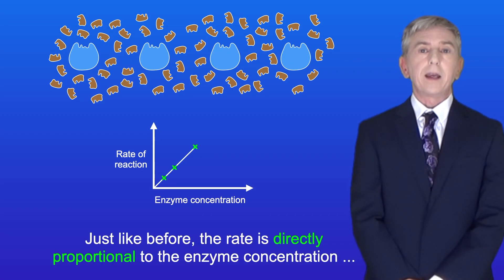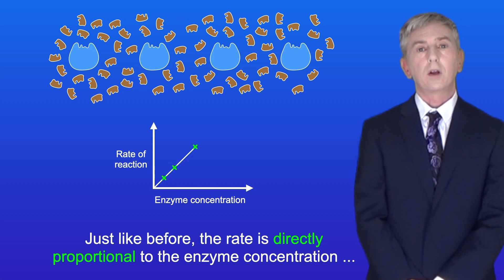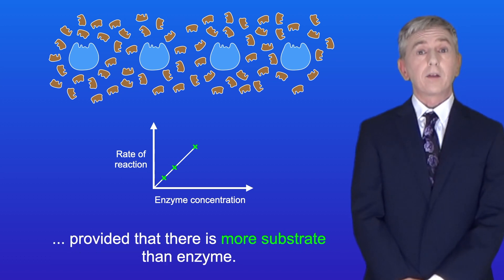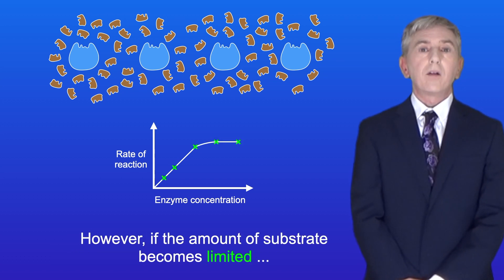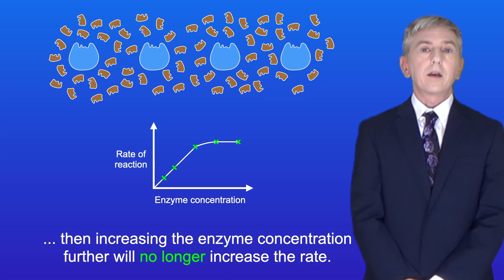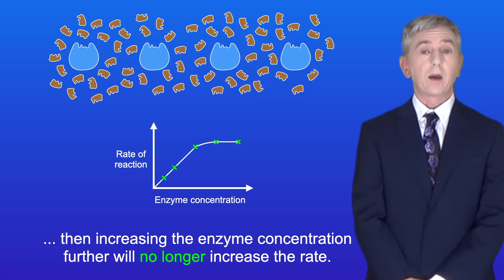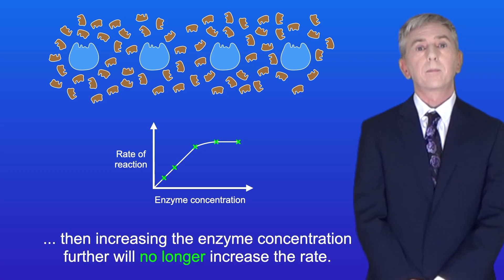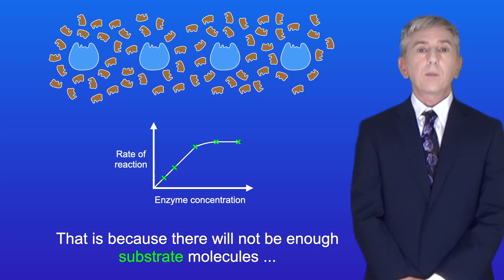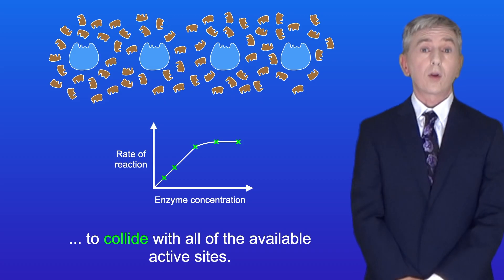Just like before, the rate is directly proportional to the enzyme concentration, provided that there's more substrate than enzyme. However, if the amount of substrate becomes limited, then increasing the enzyme concentration further will no longer increase the rate. That's because there will not be enough substrate molecules to collide with all of the available active sites.